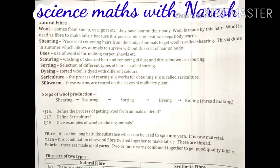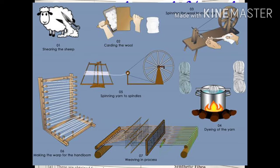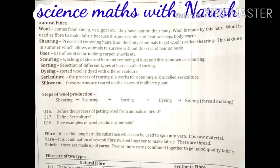The next step after sorting is dyeing. The sorted wools are dyed with different colors. Since animal hairs naturally come in only a few colors — some white, some black — they are colored according to human requirement or market demand.